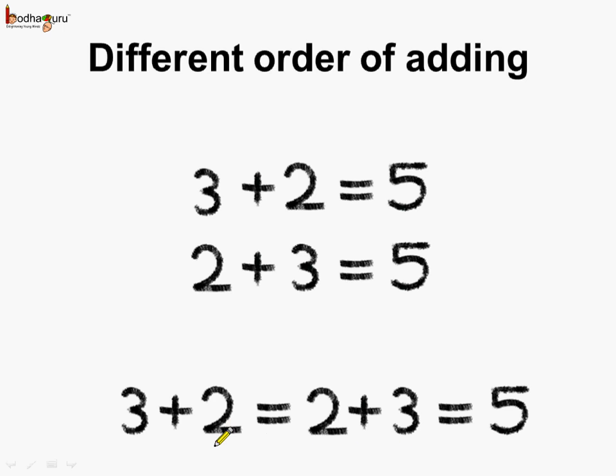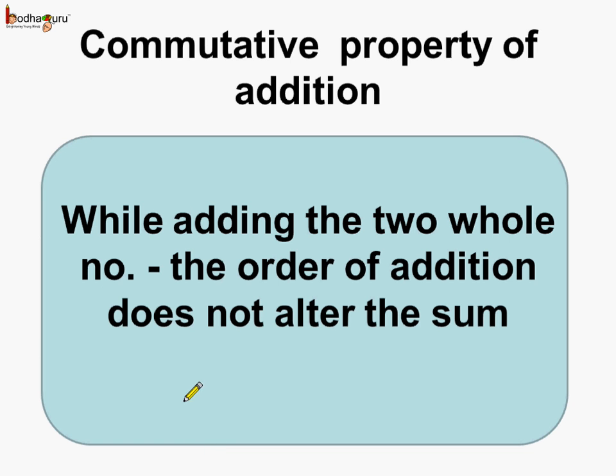So changing the order of the numbers while adding does not change the sum. We get the same answer always. So always remember children, while adding two whole numbers, the order of addition does not alter the sum. It remains the same. This is called the commutative property of addition. Understood?